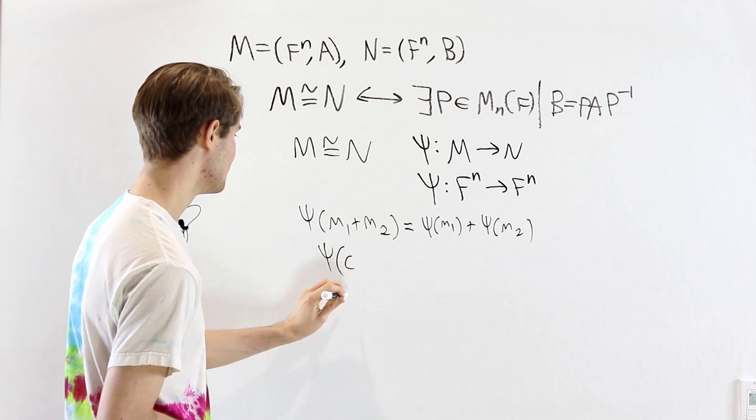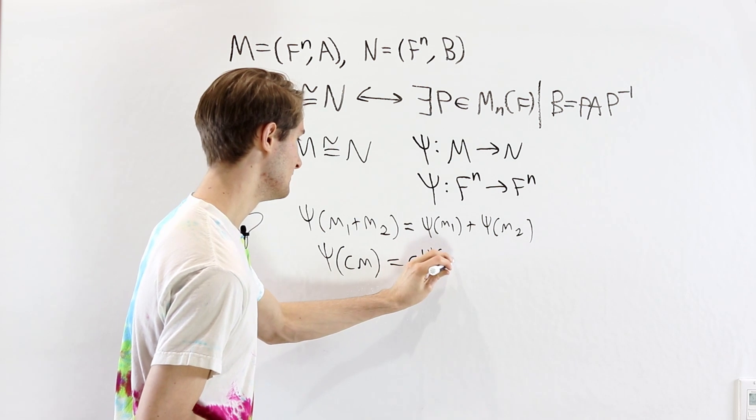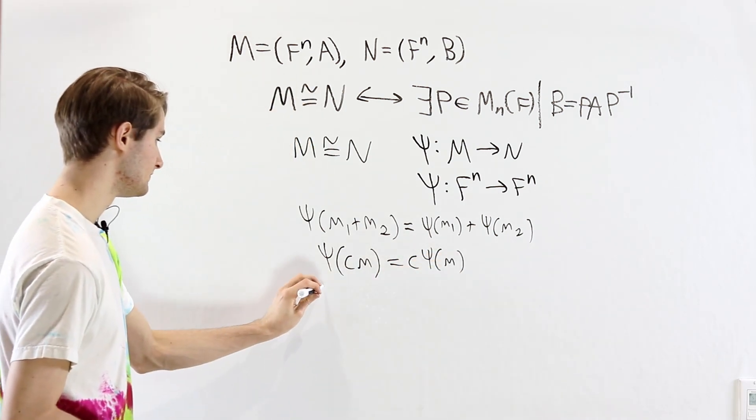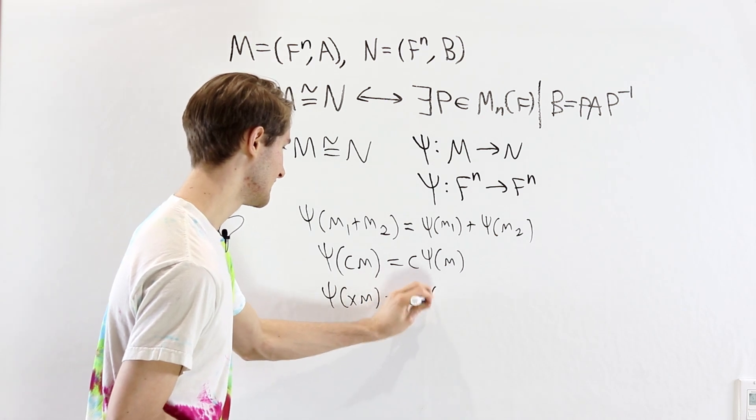First of all, if we have some c being in the field, then ψ of cm is equal to c times ψ of m. And then also, ψ of xm is equal to x times ψ of m.